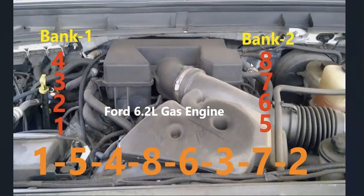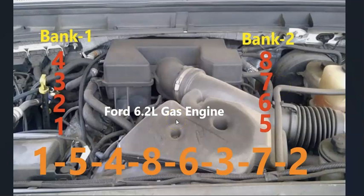Bank one is going to be on the passenger side and bank two is going to be on the driver's side. If you ever need to know what side of an engine is bank one or bank two, just find the number one cylinder — that's always bank one, and the opposite is always bank two. Again, the firing order for the Ford 6.2 liter gas engine is 1-5-4-8-6-3-7-2. If this video helps you, please click like.